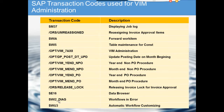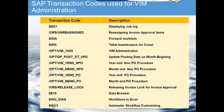Then there is SWI2_DIAG for normal workflow administration, to find VIM workflows that are in error and need assistance. Last but not least, since VIM works entirely on workflow, SWU3 is the most important transaction code. Workflow needs to run for VIM to function, and SWU3 must be set up and running first. All these transaction codes will be covered in the system with detailed discussion later.